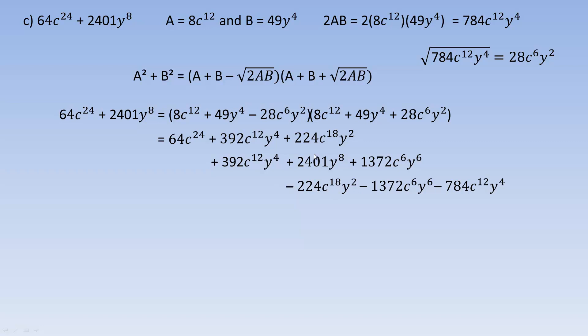We have a bunch of things that add to zero. The 224c to the eighteenth y squared terms are opposites and add to zero. The two 392c to the twelfth y to the fourth terms add to positive 784c to the twelfth y to the fourth, which is opposite the negative 784 term — so all that adds to zero. The 1372 terms are opposites as well. So we're just left with 64c to the 24th plus 2401y to the eighth, demonstrating that those are the factors of that binomial. That's how you factor the sum of two squares and how you can tell which ones will actually factor — because lots don't, but a few actually will.